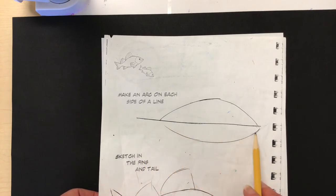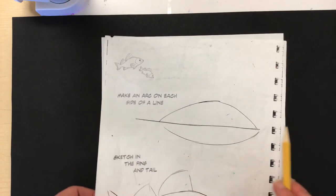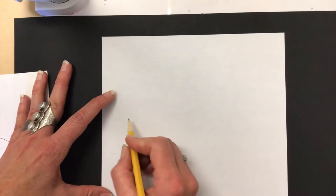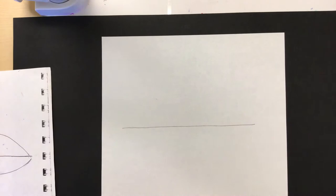The first thing I'm going to do in step number one is I'm going to create a horizontal straight line that moves from side to side just like this. Right here on my paper, I'm just going to make a line. There it is.